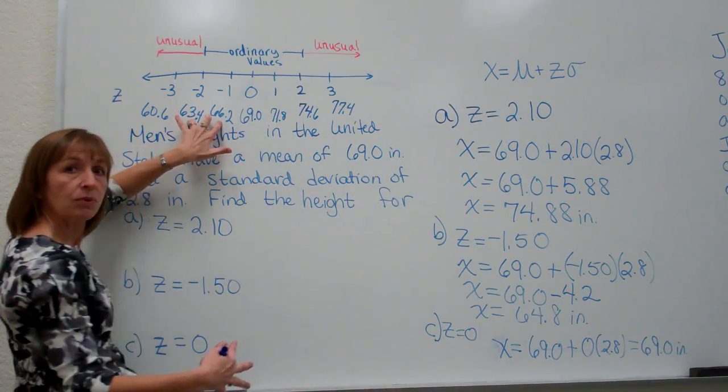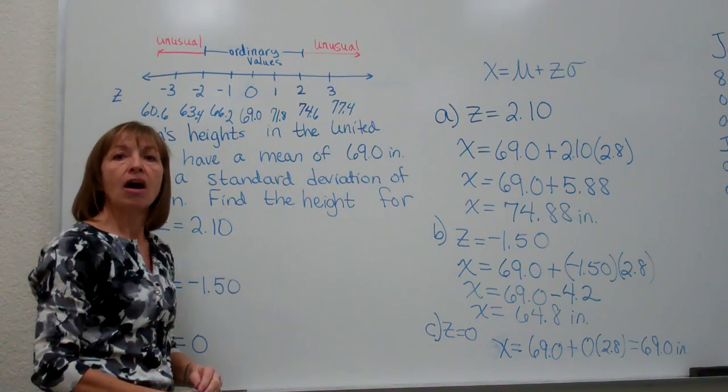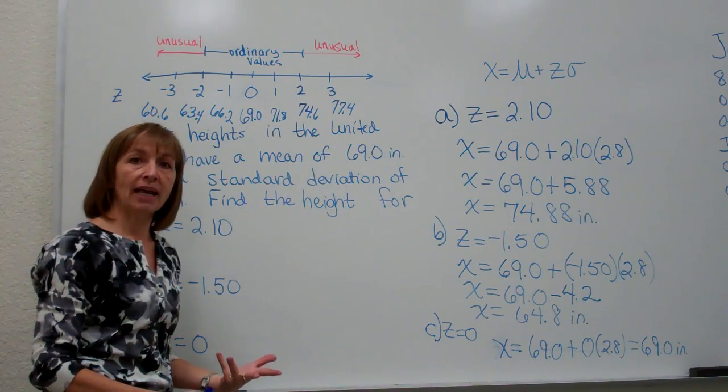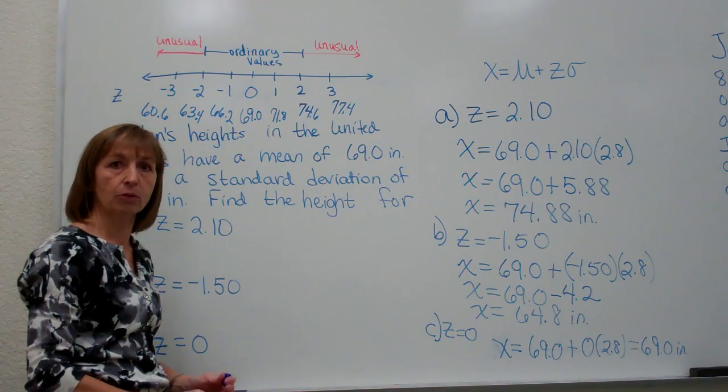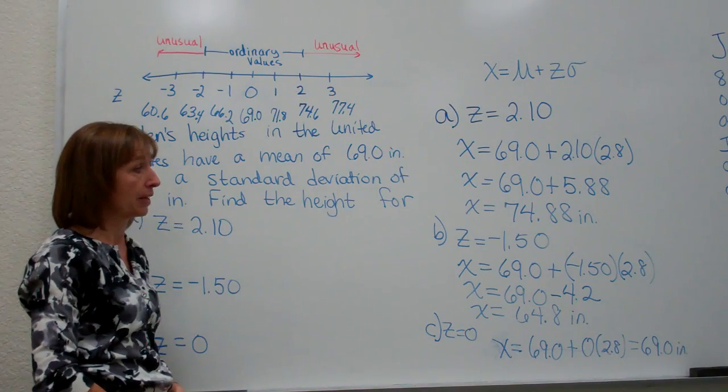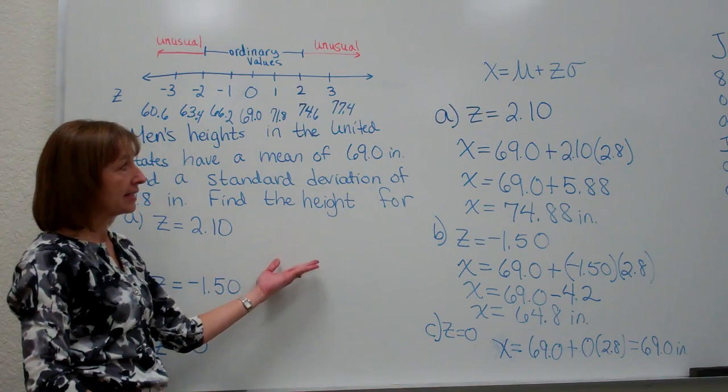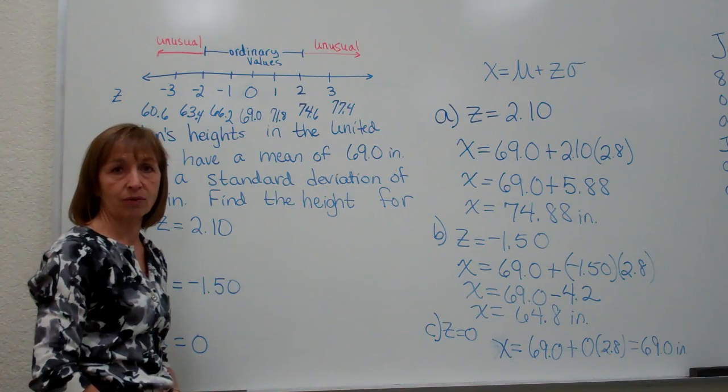Again it helps us with the common sense to see if what we're getting back as answers from this are reasonable, so that we can kind of tell if we've got the formula right or if we needed to think a little bit harder to make sure that we put the numbers in where they belong in our equations. But this was an example of taking z-scores and changing them back into their raw scores.